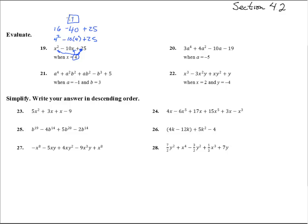Number 20. We're going to stick in negative 5 for this one. So this is 3 times negative 5 to the 4th plus 4 times negative 5 squared minus 10 times negative 5 minus 19. So this is 3 times positive 625 plus 4 times positive 25, that's going to be positive 50, and then minus 19. Punch that into your calculator and we get 2006.